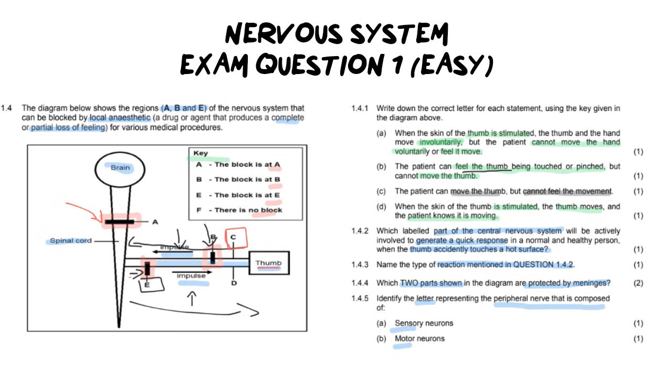This one over here, that is the sensory neuron, because the impulse is coming from the receptor, the thumb, or the nerves in the thumb down towards the spinal cord. And the motor is going to be D, because that is carrying an impulse away from the central nervous system towards the effector, which would be the muscles in the thumb.